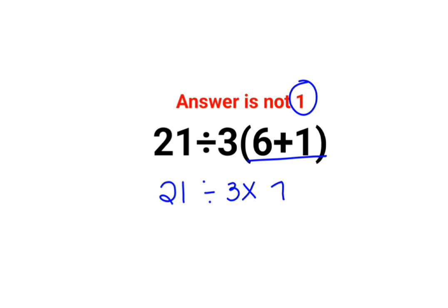And then you get the answer as 1. No, that's not correct. The reason for that is that in mathematics, division and multiplication hold equal importance.